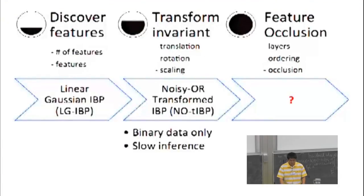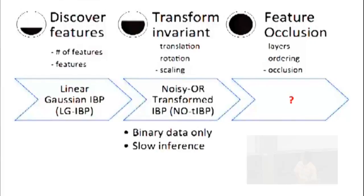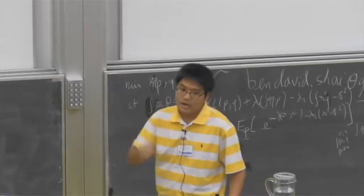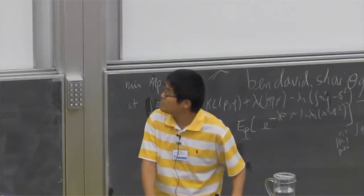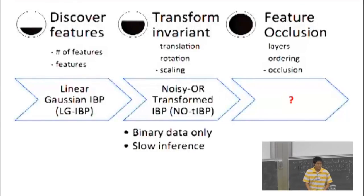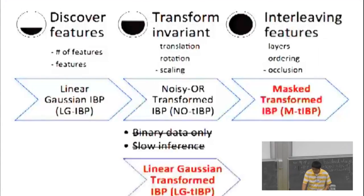In 2005, a linear Gaussian Indian Buffet process was proposed, and this was the very first step in this problem domain. Later on, Oswell and Griffiths proposed the noisy or transformed Indian Buffet process. However, there are two major drawbacks of this model. It applies to binary data only—black and white images—and second, this model is very slow in inference. We first tackle these two problems by proposing the linear Gaussian transform IBP, and then we extend this model into the mask transform Indian Buffet process.